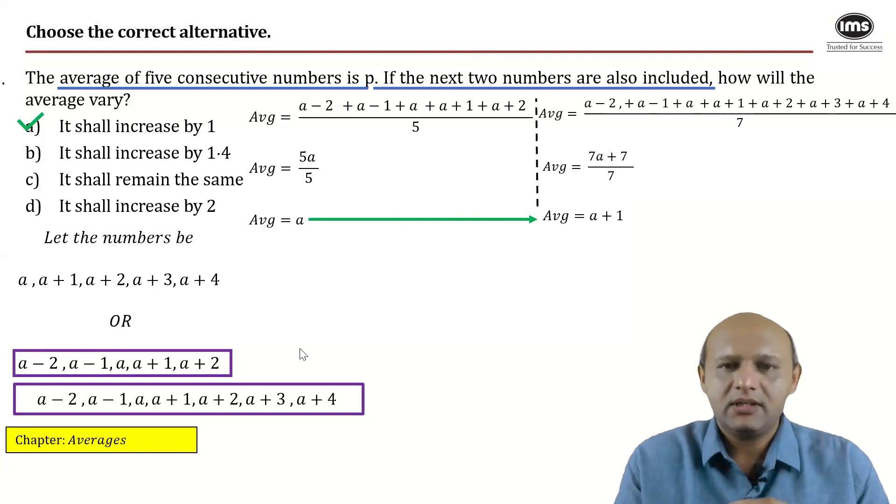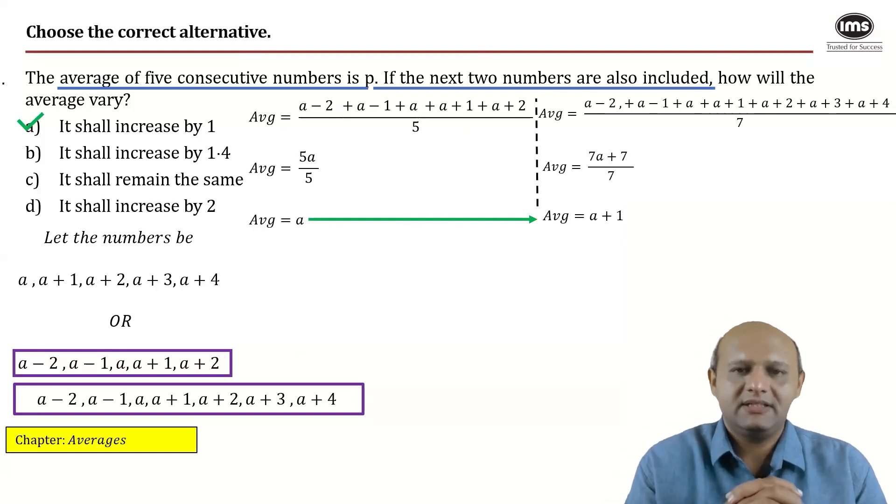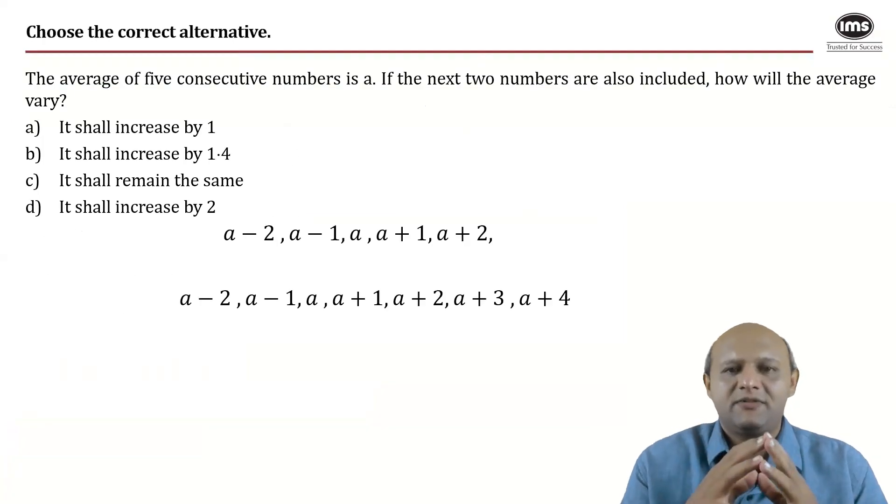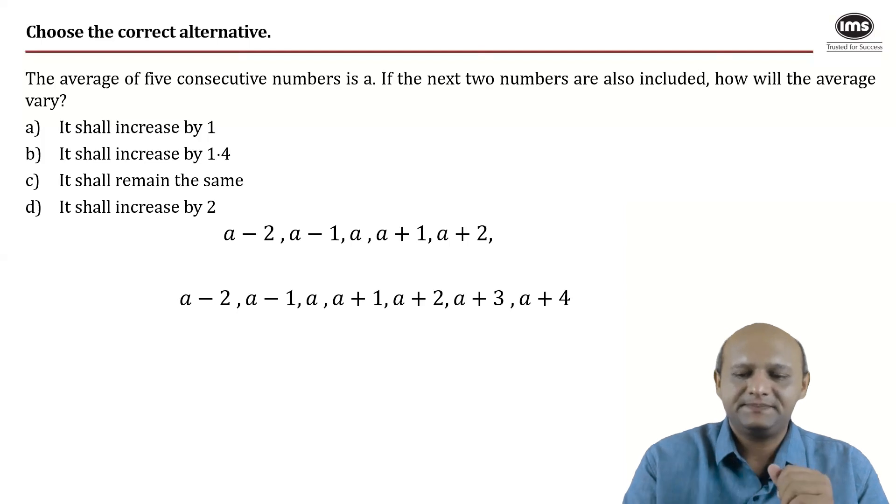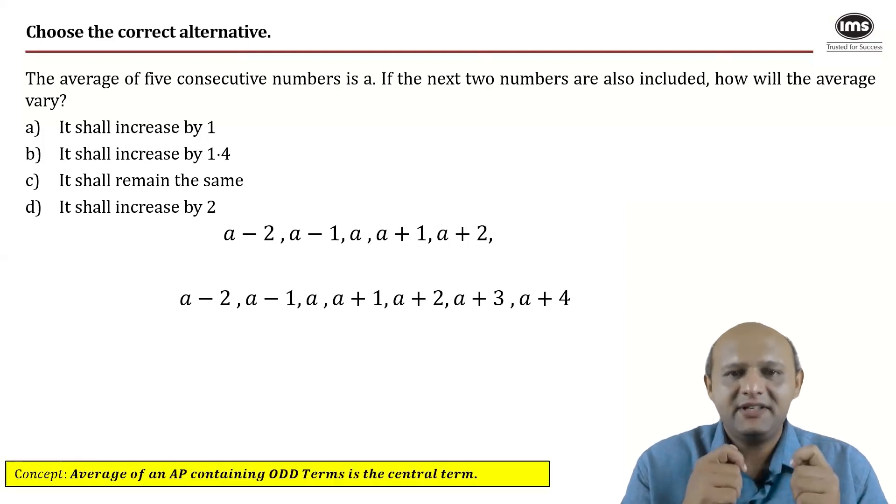Is there any other way to solve the same question? Yes, there is. Let's look at that. Assuming the same set of numbers, if you already are aware of the property that average of an arithmetic progression, this is an arithmetic progression by the way, if you notice.